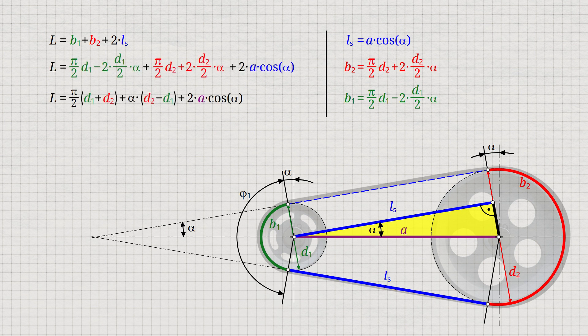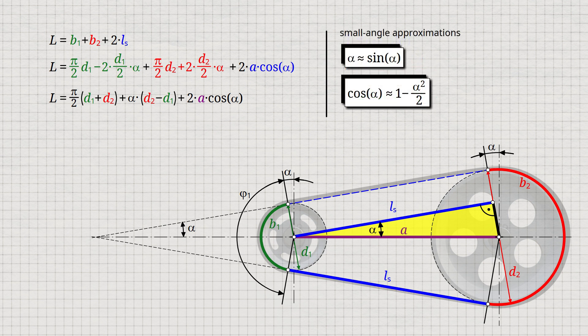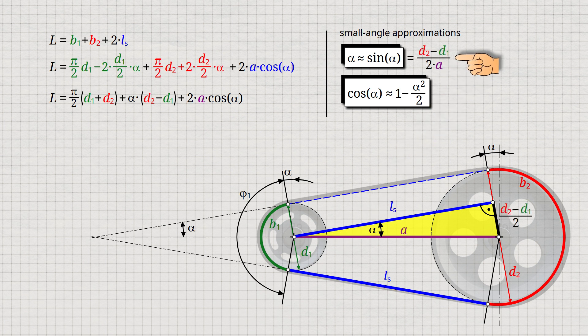We can simplify this formula somewhat by using small angle approximations, since in most cases in practice the inclination angle alpha is small. The sine of the angle alpha, or the angle alpha itself due to the small angle approximation, can be determined from the pulley diameters using the yellow triangle as indicated. This results in the shown approximation formula for the cosine of the angle alpha.